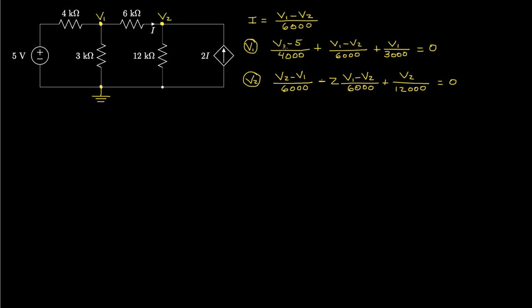Next, we'll rewrite these equations, capturing all coefficients that multiply V1. We have 1 over 4,000, 1 over 6,000, and 1 over 3,000. Putting those over the least common denominator of 12,000, we get 3 plus 2 plus 4, giving us 9 times V1. Then for V2, we have 1 over 6,000 times V2. That's all equal to — moving the negative 5 over 4,000 to the other side — 5 over 4,000.